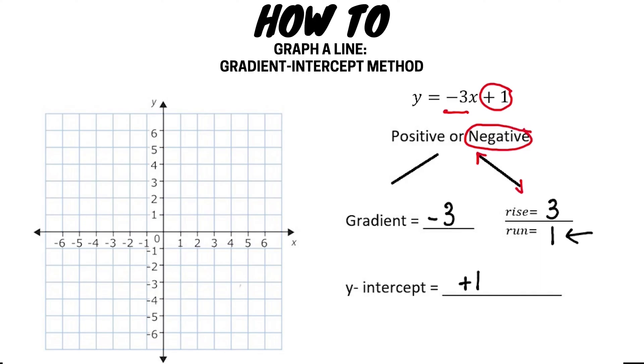So again our first step is to mark on the number plane our y-intercept, which is at positive one. From this point we are then going to rise three units and run to the left one unit. This is where we mark our second point. Now that we have two points we can connect these points to create a straight line that satisfies the equation y equals negative three x plus one.